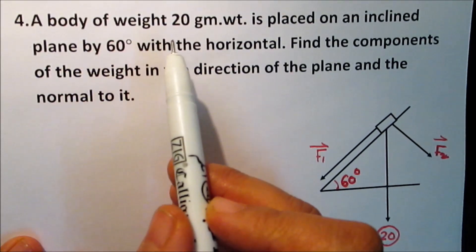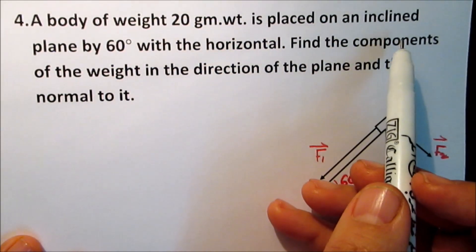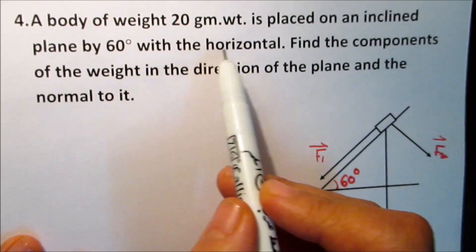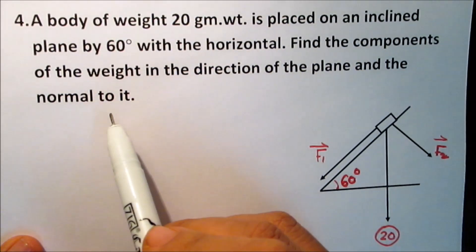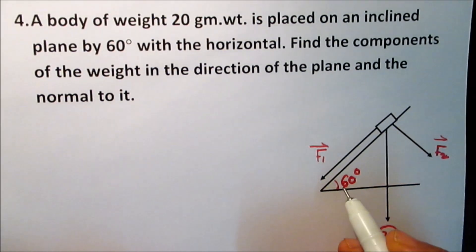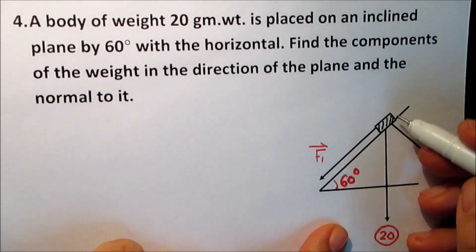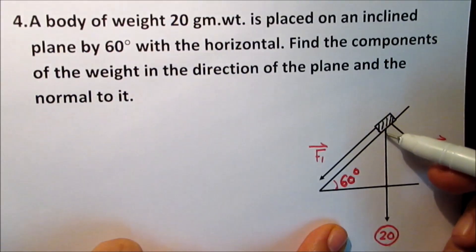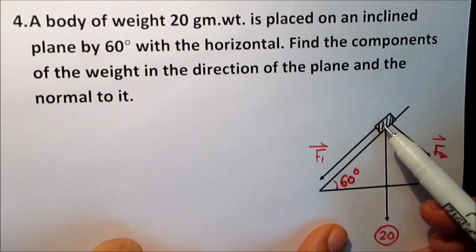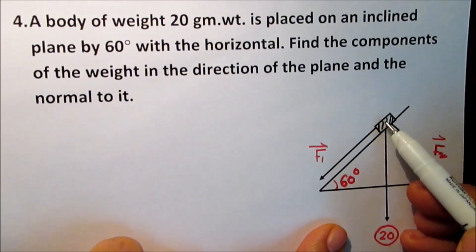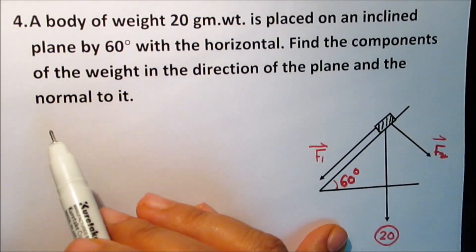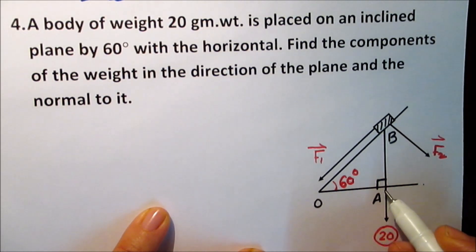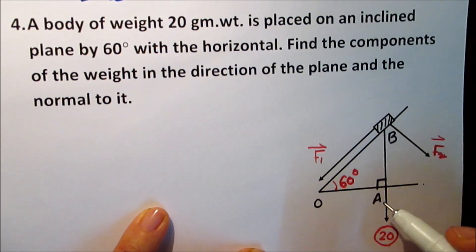A body of weight 20 gram weight is placed on an inclined plane inclined at 60 degrees to the horizontal. Find the components of the weight in the direction of the plane and normal to it. The weight is a vertical force, and the plane forms a right triangle OAB. Since the plane inclines at 60 degrees to the horizontal, the angle at the top of the triangle is 30 degrees.